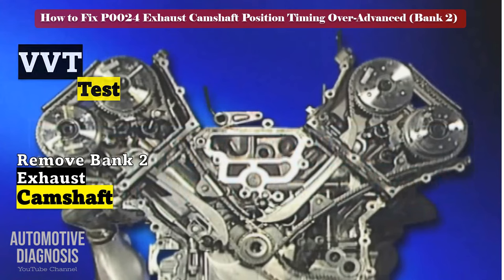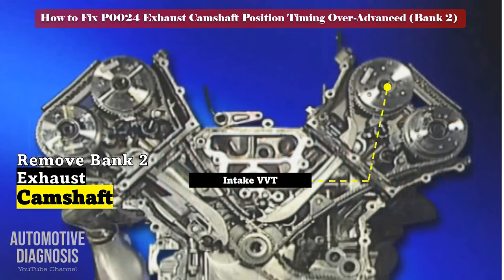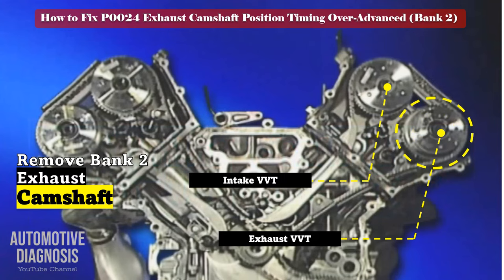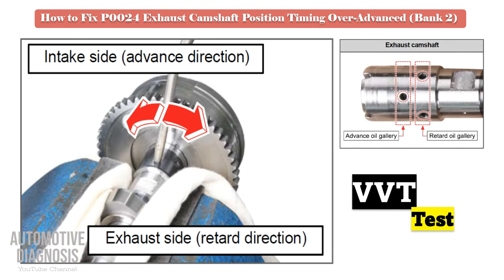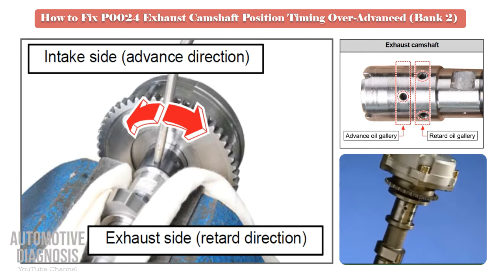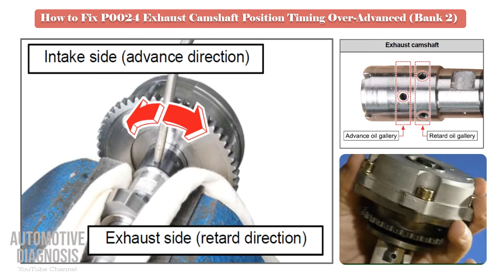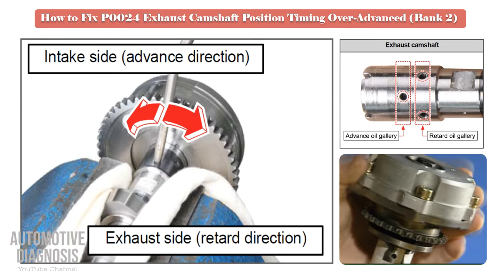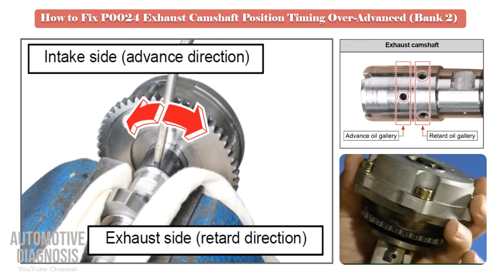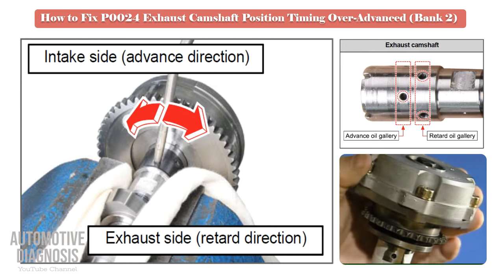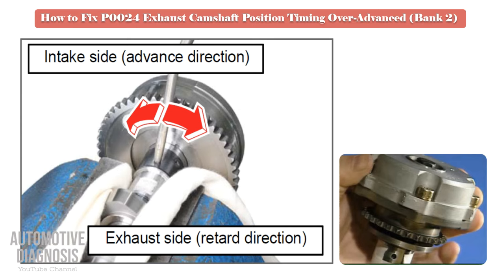For testing the VVT, remove the bank 2 exhaust camshaft and locate the advance and retard oil passages on the camshaft. Test the exhaust VVT by providing compressed air into the relevant oil galleries. When you provide air into the retard oil gallery, the VVT should rotate, as the exhaust VVT is locked at maximum advance. Before providing compressed air, make sure the VVT is locked and does not rotate. If the VVT fails this test, it must be replaced.